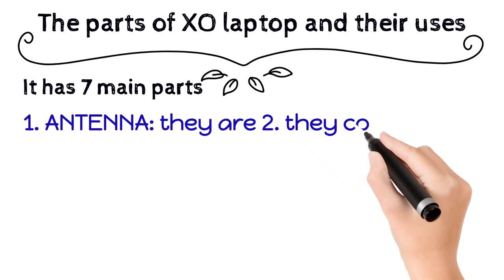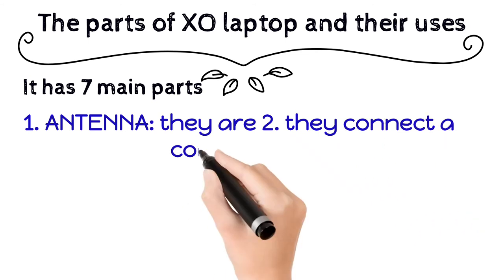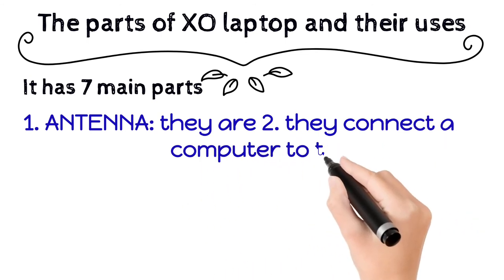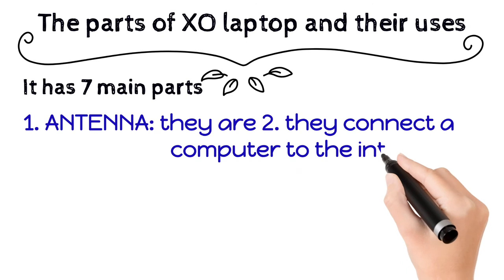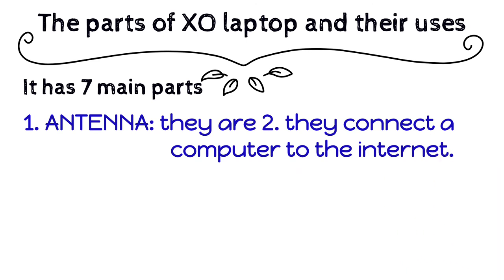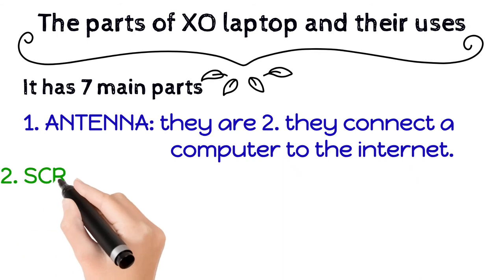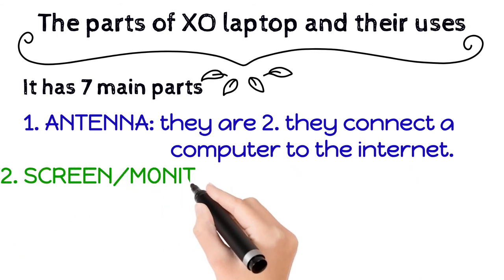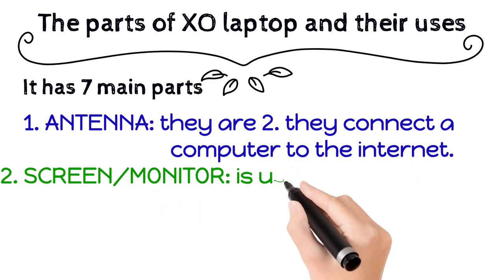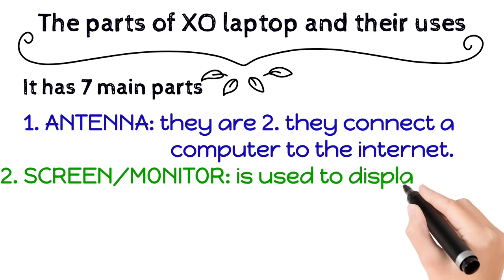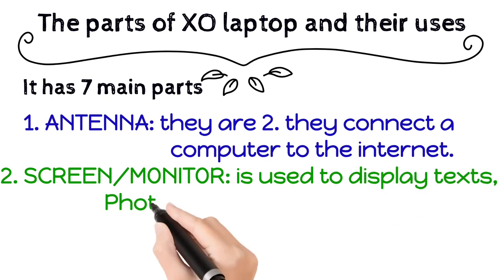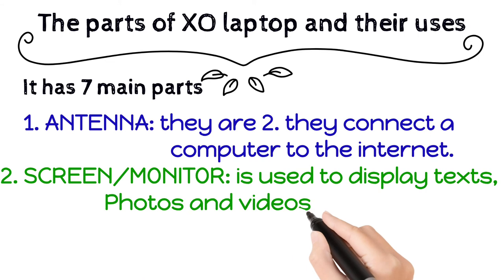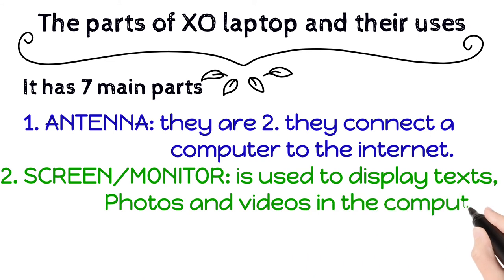There are two antennas, and they connect the computer to the internet. We also have the screen or monitor. The screen or monitor is used to display texts, photos, and videos in the computer.